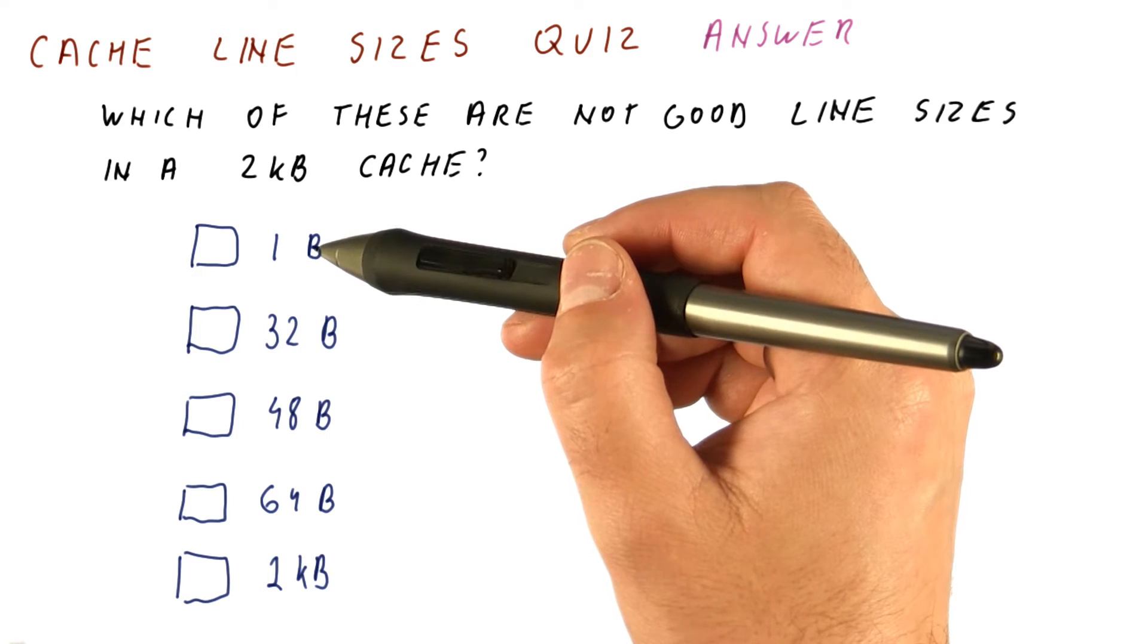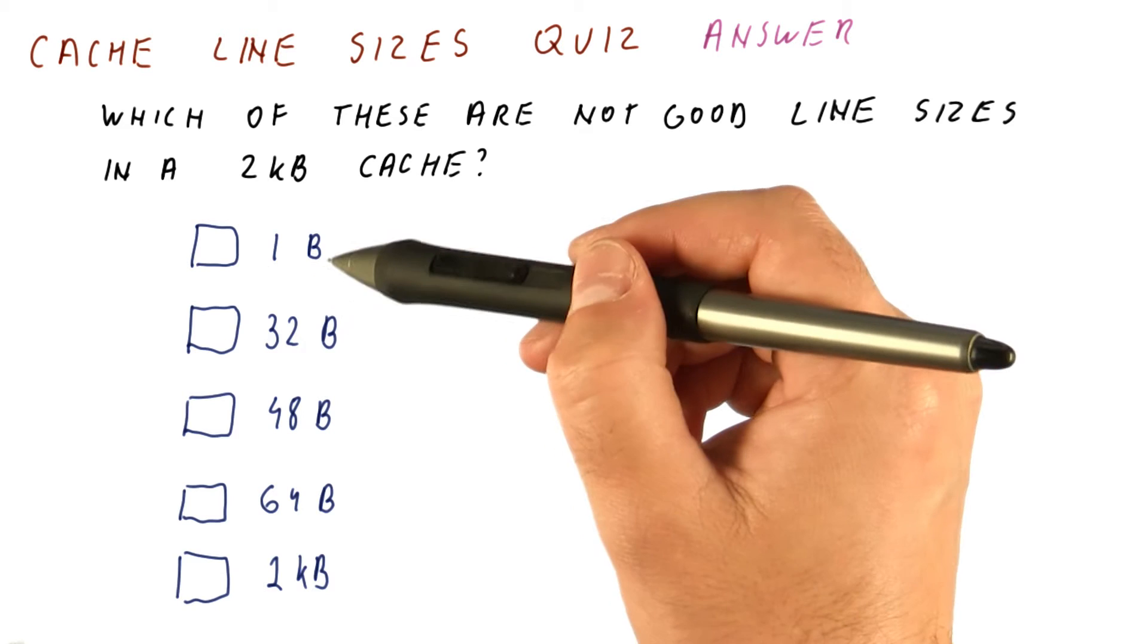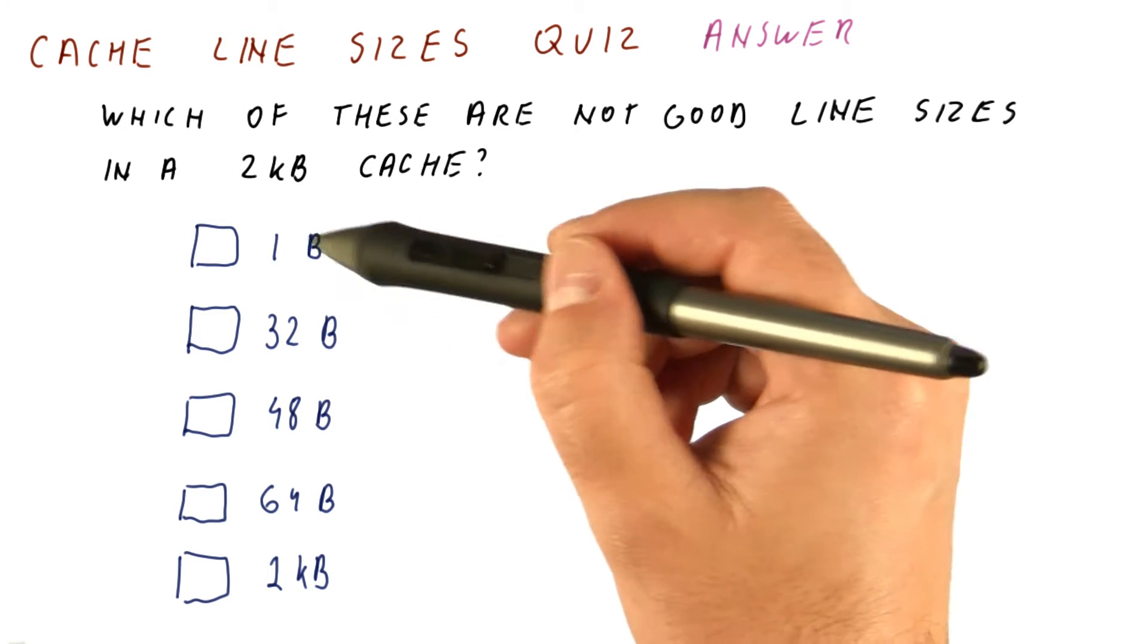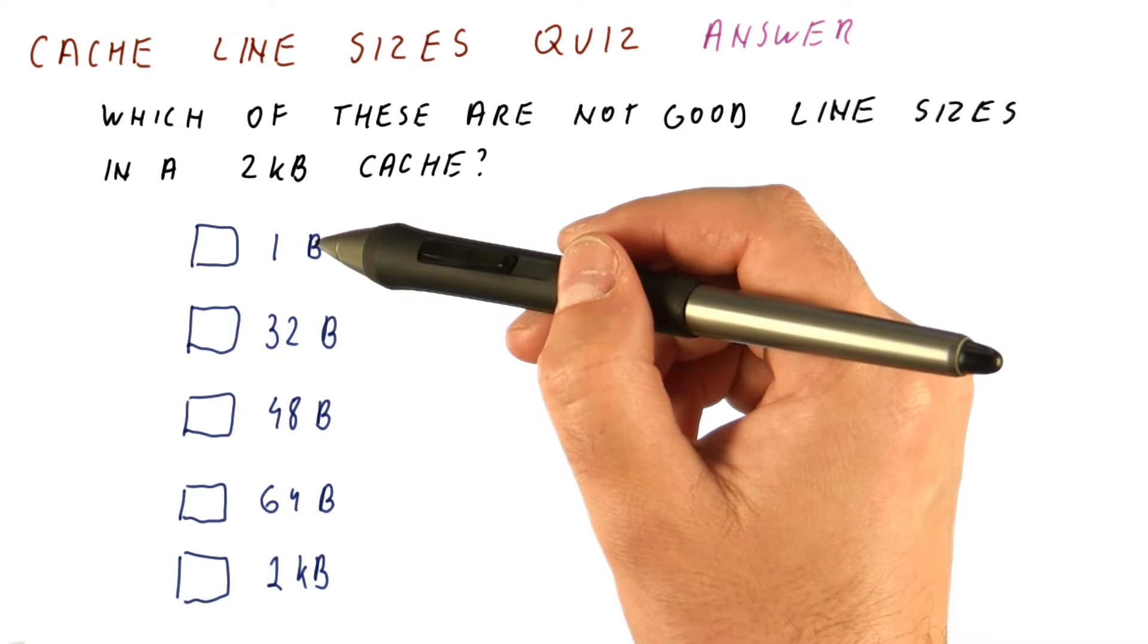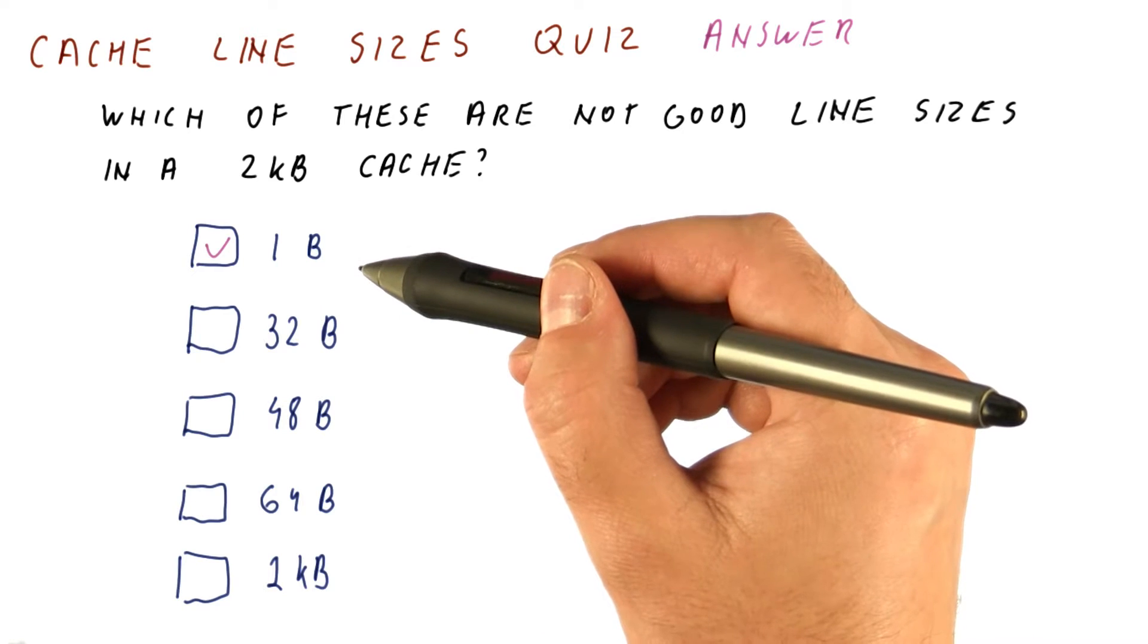A one byte line is not a good one because it doesn't exploit spatial locality, and because word sized accesses will need to access multiple blocks or multiple lines in the cache. So this is definitely not a good size.